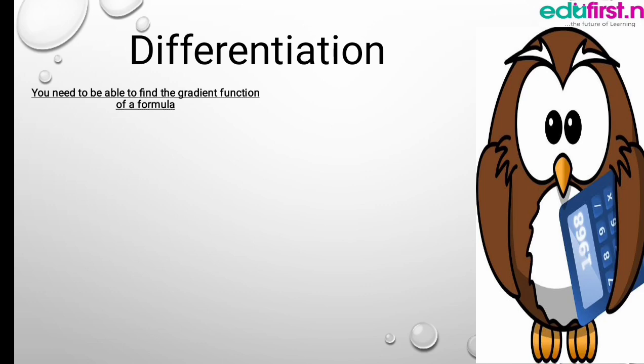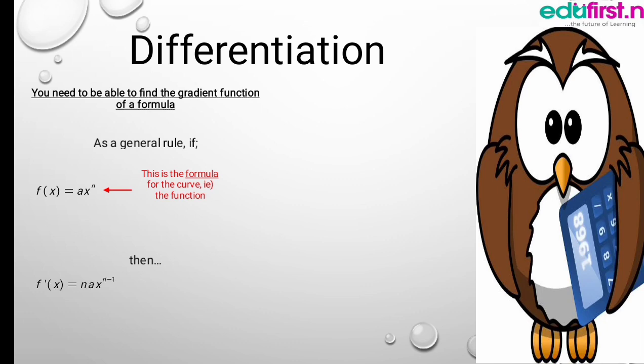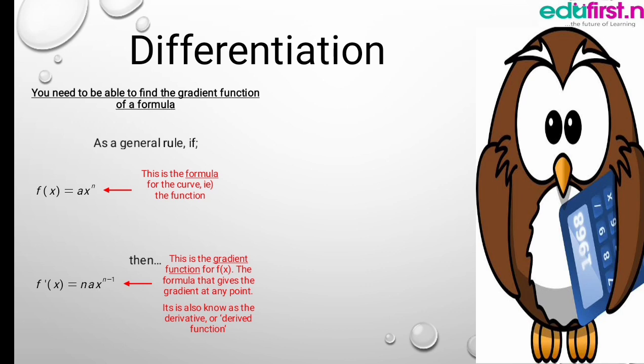In differentiation, you need to be able to find the gradient function of a formula. As a general rule, if f(x) equals ax to the power n, this is the formula for the curve — the function. Then f'(x) equals nax to the power n minus 1. This is the gradient function for f(x), the formula that gives the gradient at any point. It is also known as the derivative or derived function.